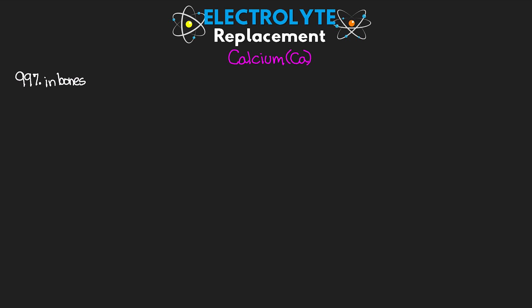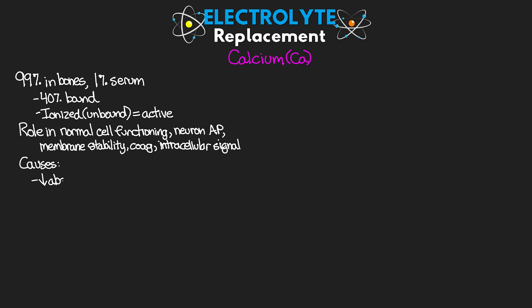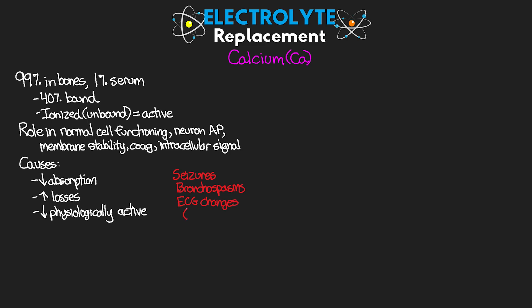Now let's move on to calcium. Calcium is commonly found in our bones — 99% of it is found there, with only about 1% in our serum. Of that 1%, 40% is typically bound to albumin and other proteins, so we actually want to use what we call an ionized — meaning unbound — calcium level, which is the active form. Calcium plays an important role in normal cell functioning, including cardiac muscle, neuron action potentials, membrane stability, coagulation, and intracellular signaling. Hypocalcemia can result from decreased absorption, increased losses, and decreased physiologically active amounts, and can lead to seizures, bronchospasms, ECG changes such as arrhythmias, and prolonged QTs.